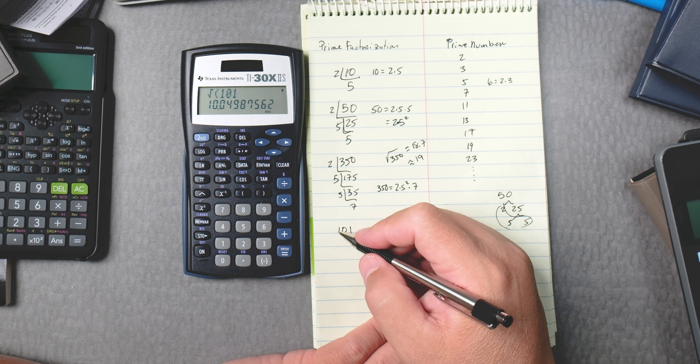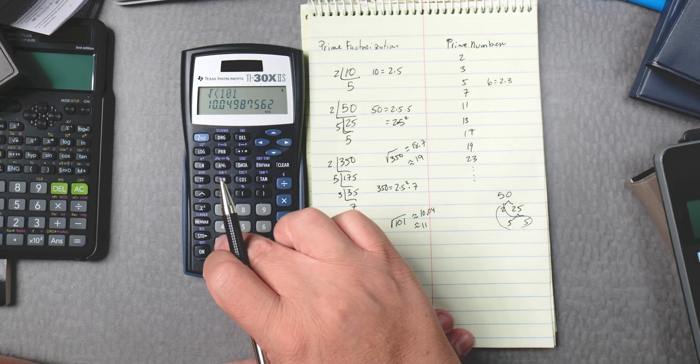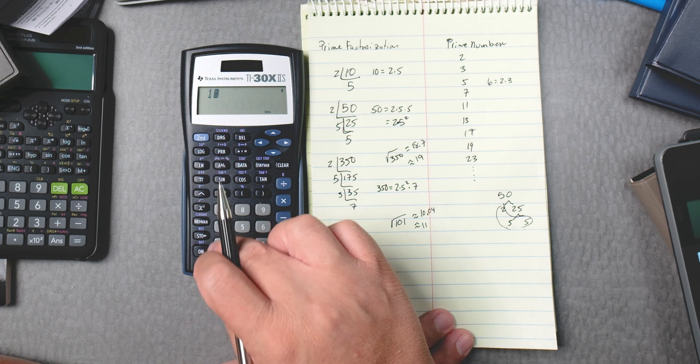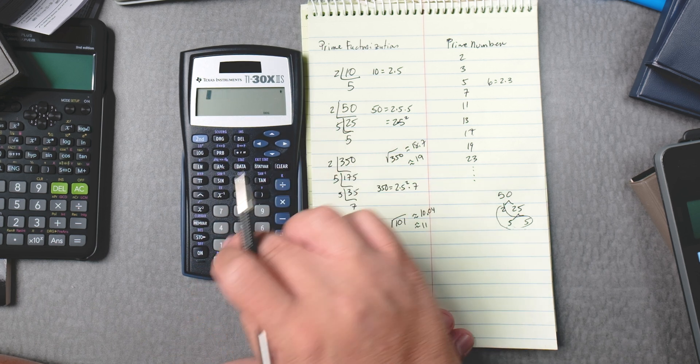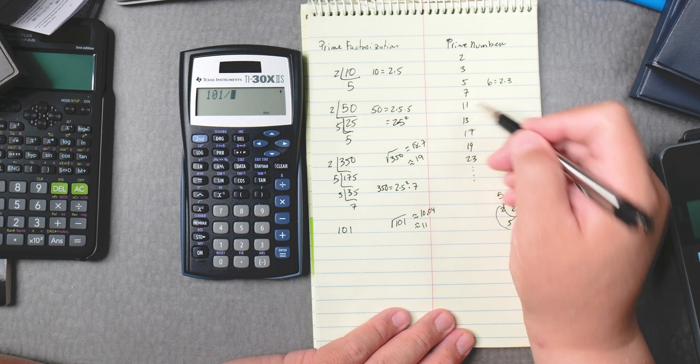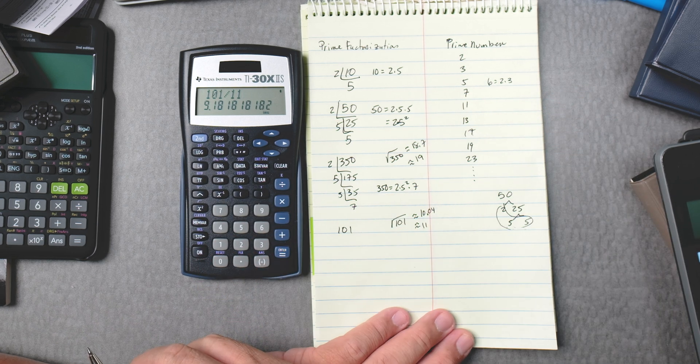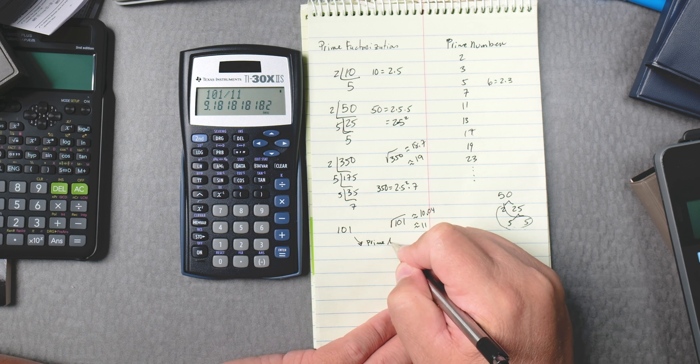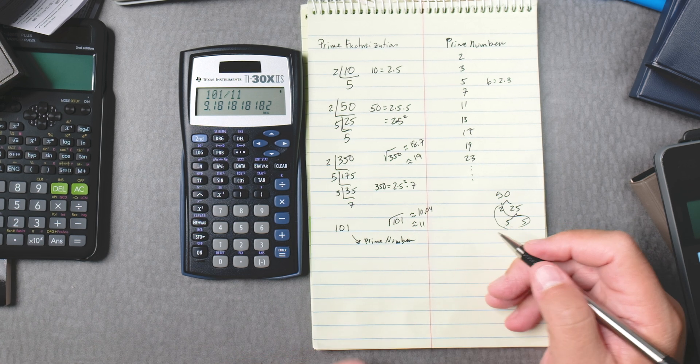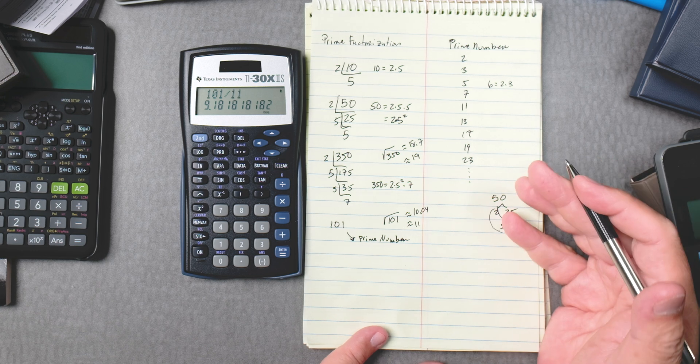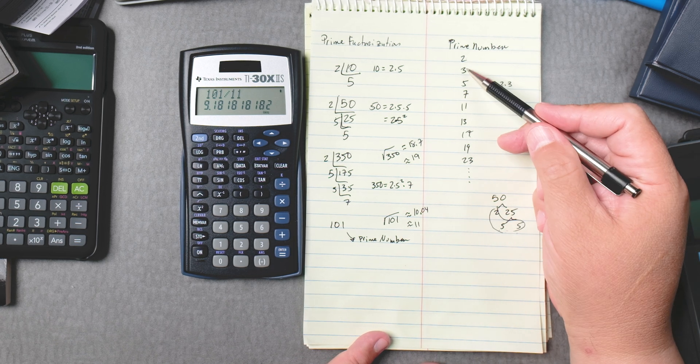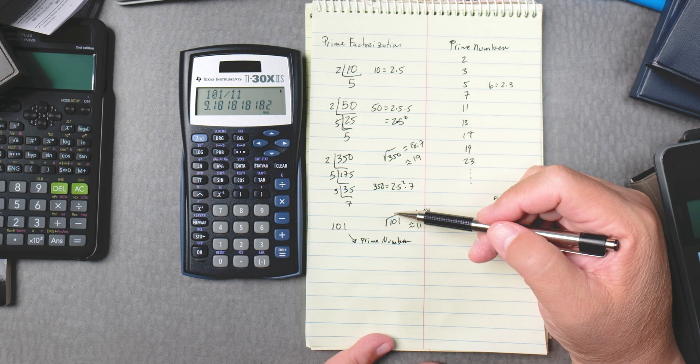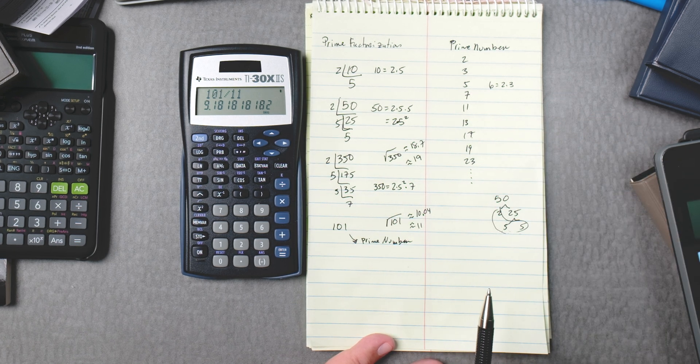So we just did 2, right? We did 2, 3, 5, 101 divided by 7. That doesn't go evenly, right? And 101 divided by 11 doesn't go evenly either. So this one is a prime number. That's one way to check it. You know, take 2, go into 101, didn't work, 3, no, 5, no, 7, no, 11, no. And that's it. You stop there. You don't have to keep going on.